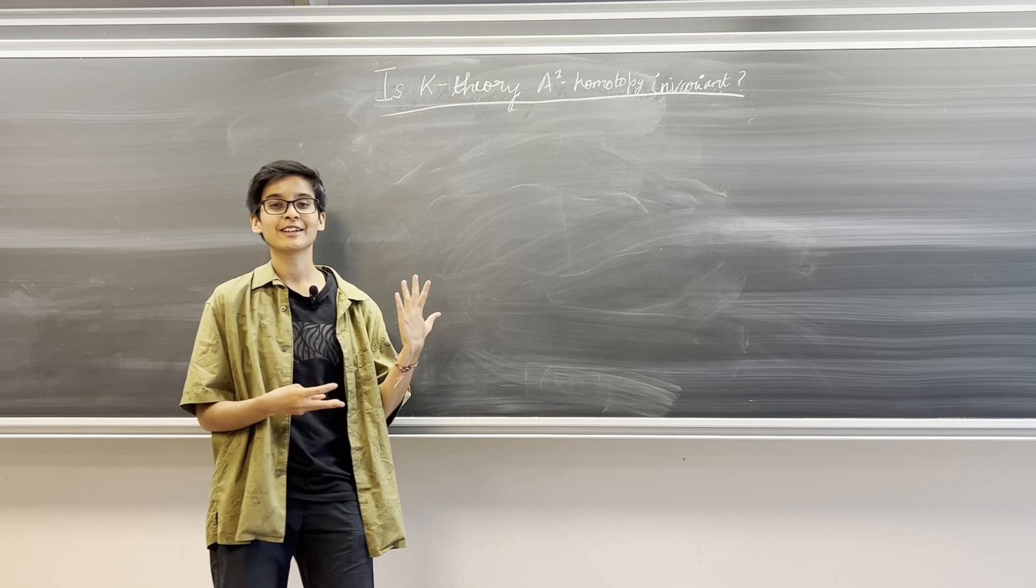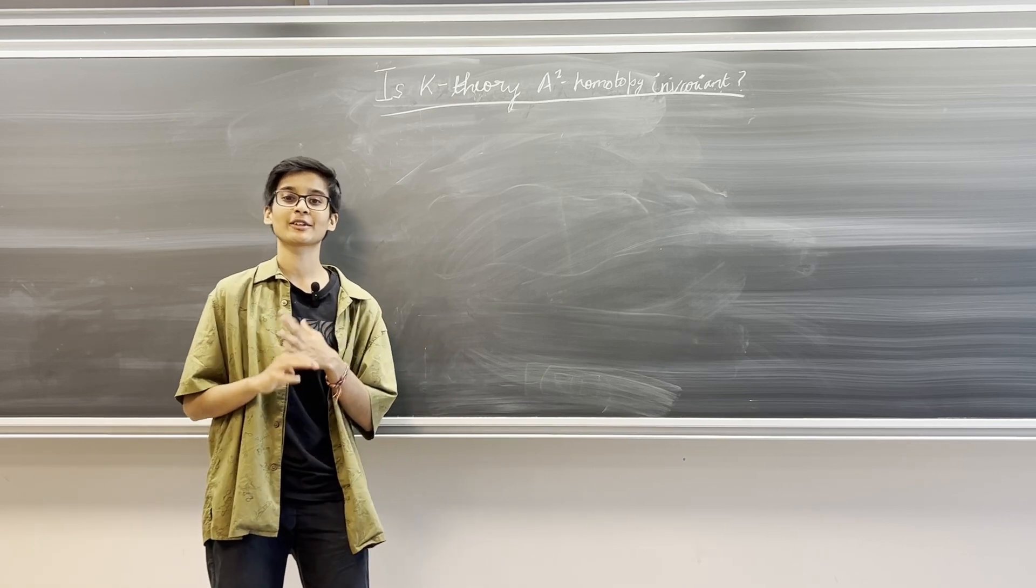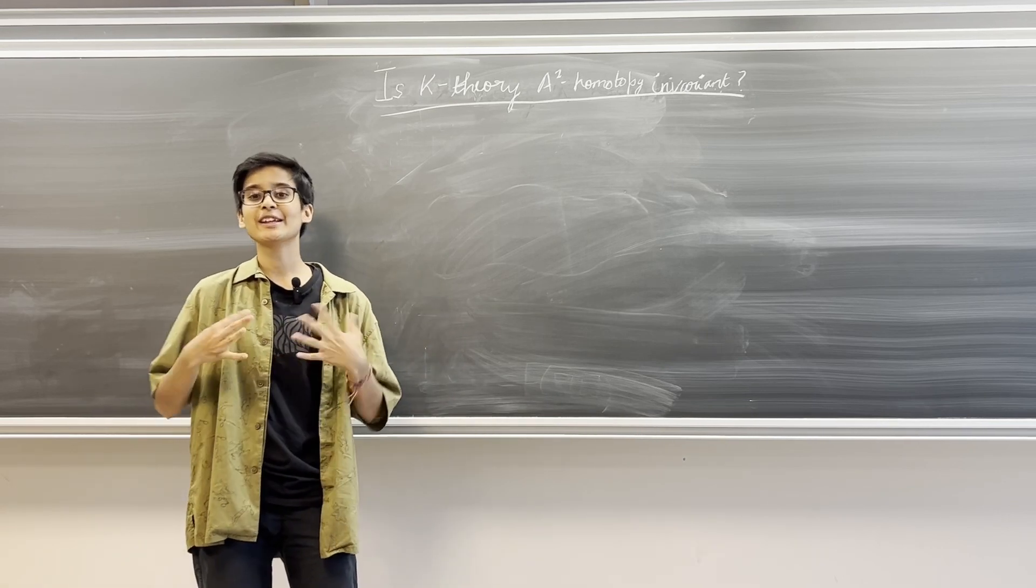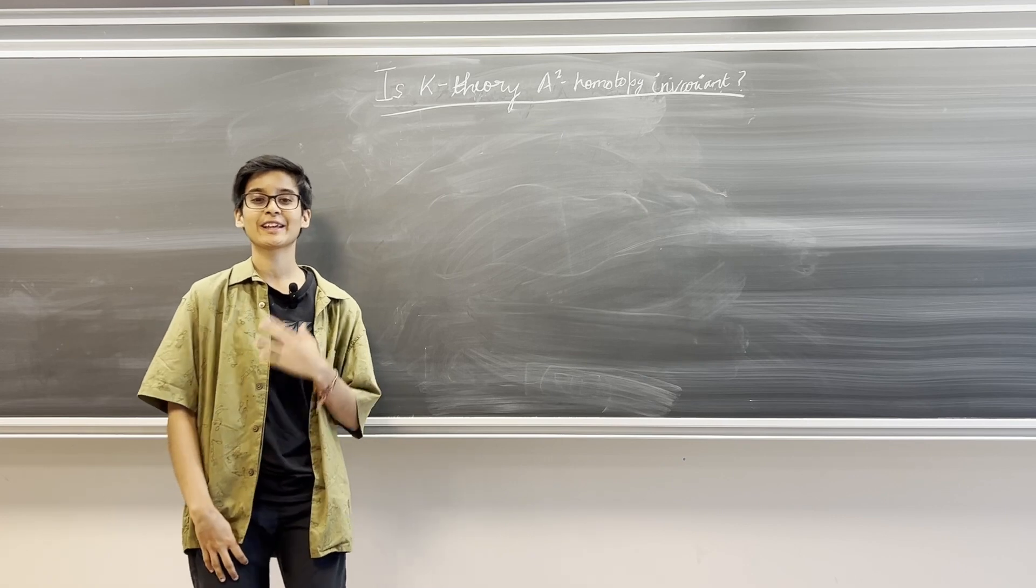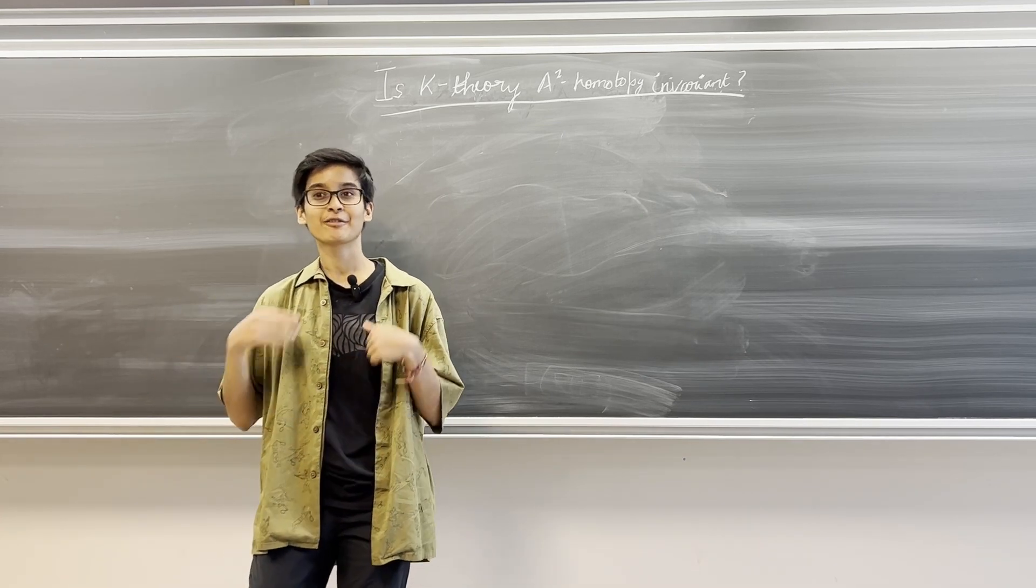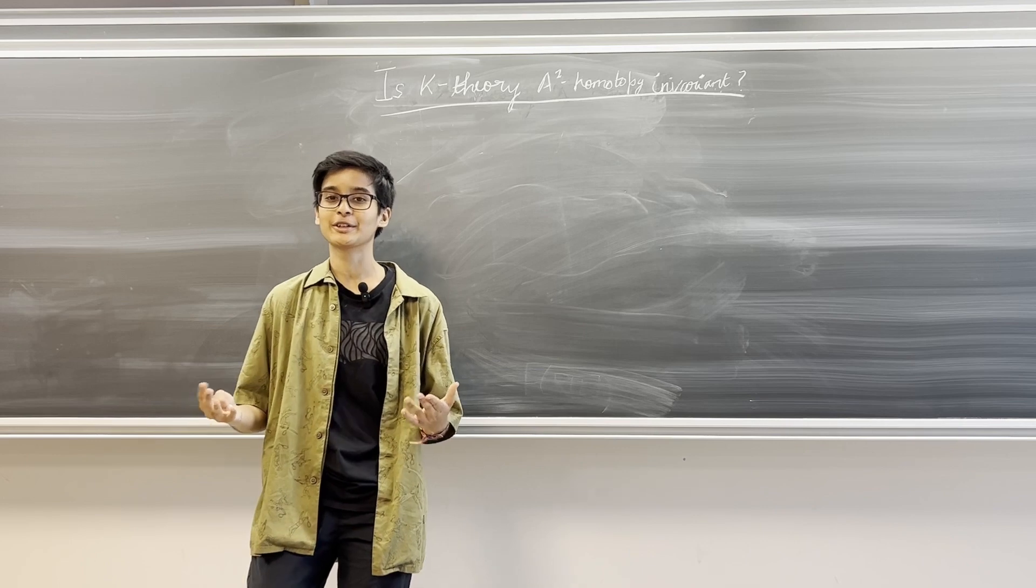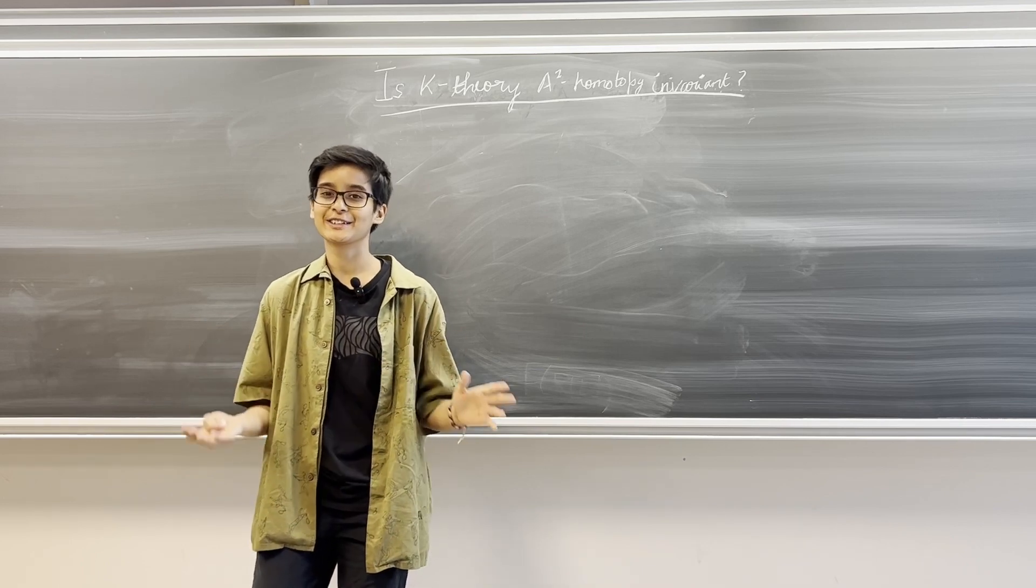One might ask if K-theory is A1 homotopy invariant always, that is given any commutative ring R. Do we know that Kₙ of R is isomorphic to Kₙ of R of T for every n greater than or equal to zero? And the answer unfortunately is no.